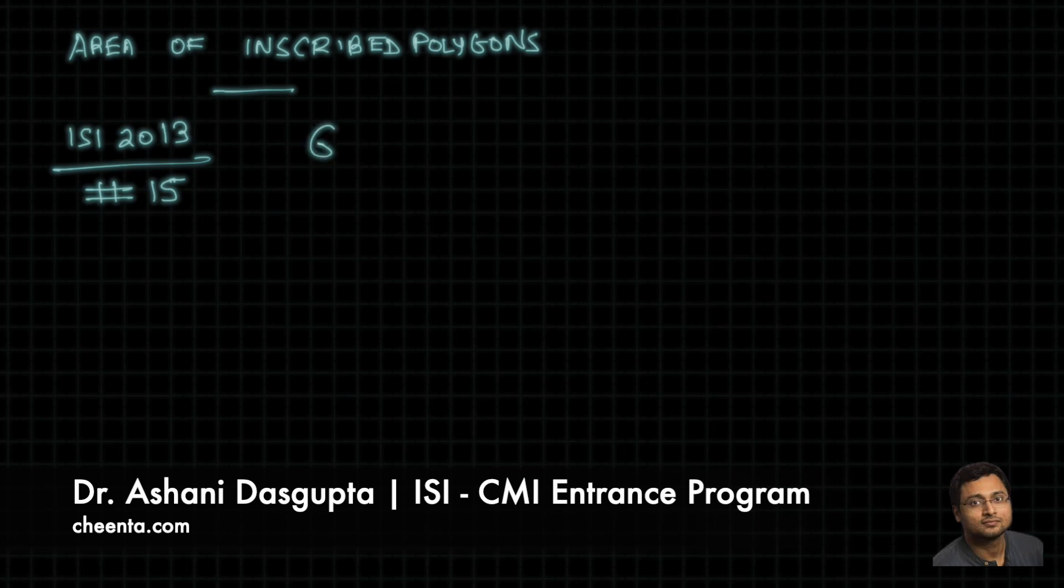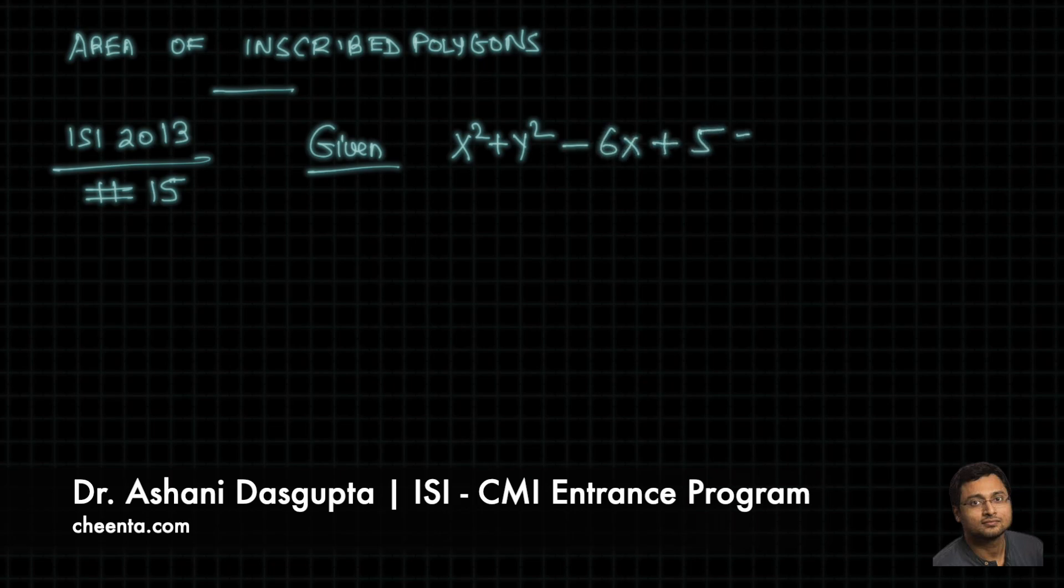Here is the given data. There is a circle whose equation is given as x² + y² - 6x + 5 = 0. This is a circle.